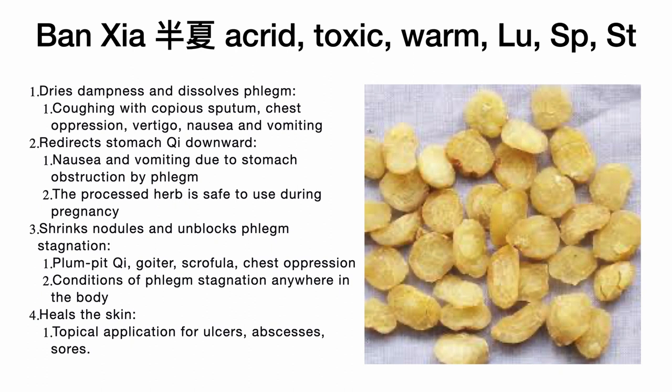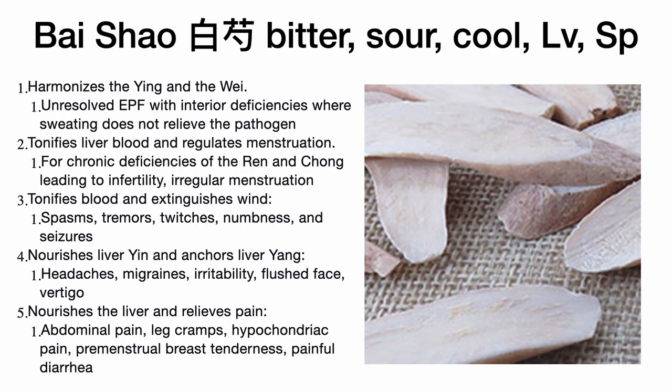Whenever we use many warm and acrid herbs, we want to ensure that yin is protected, because acrid warm herbs disperse fluids which are part of yin — in other words, yang consumes yin. Therefore we must use astringent and sour-flavored herbs to balance the dispersing quality. The next herb in our formula is Bai Shao — white peony root.